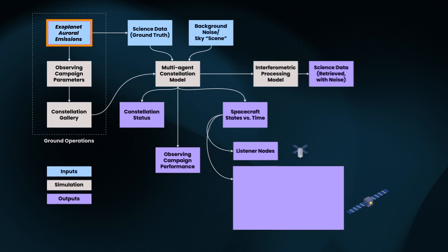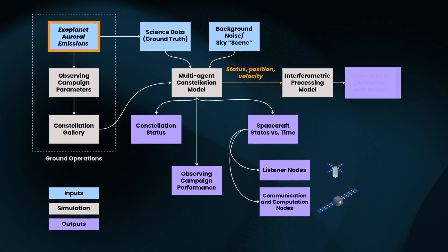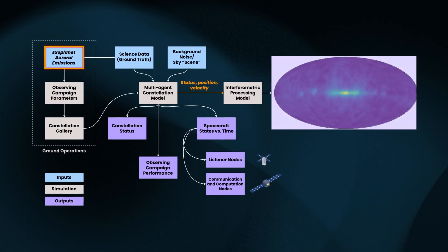At the end of the observing campaign, the spacecraft statuses, positions, and velocities are fed into the interferometric processing model, which then generates science data products that are retrieved from a simulated sky.